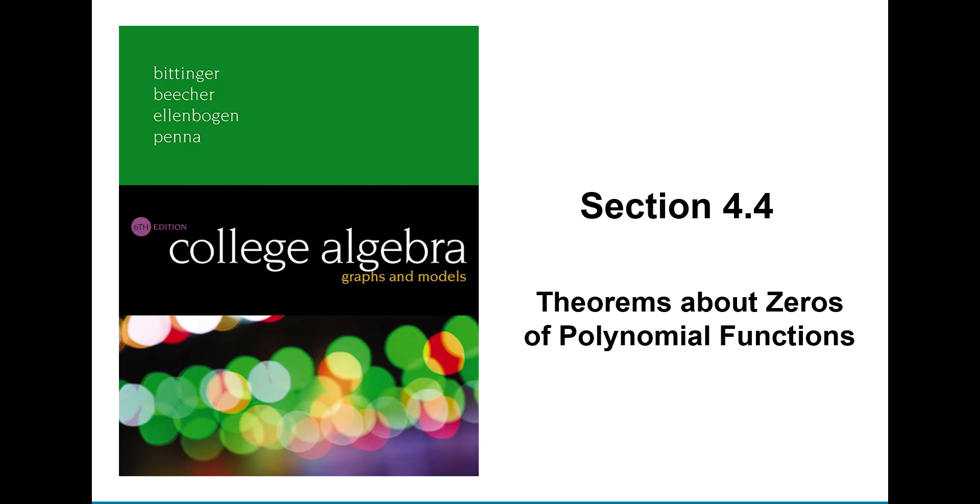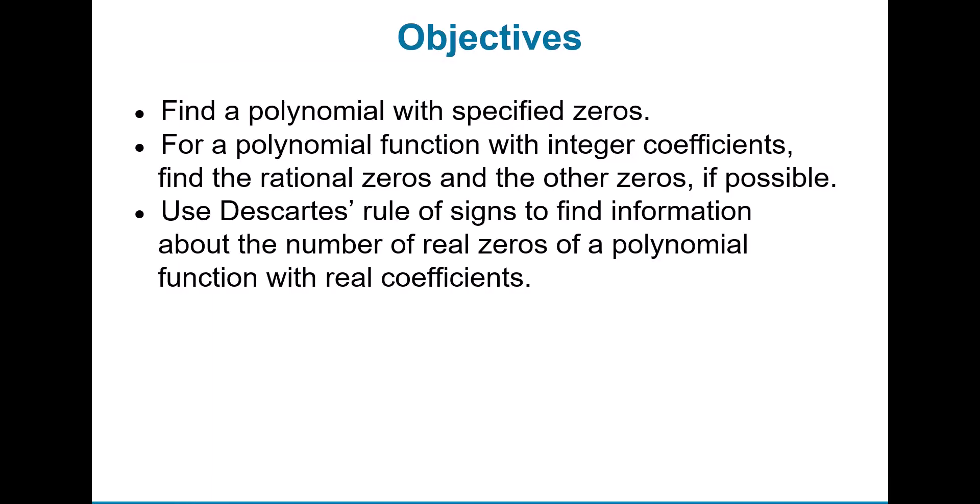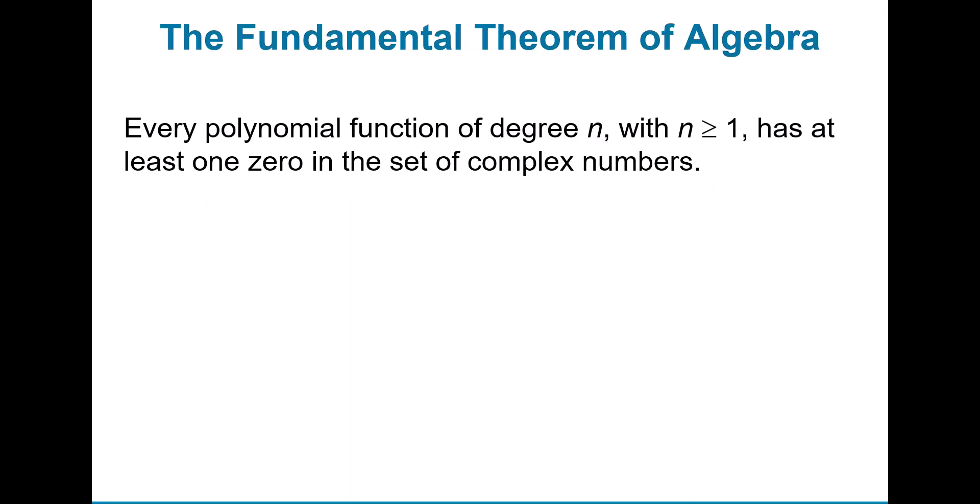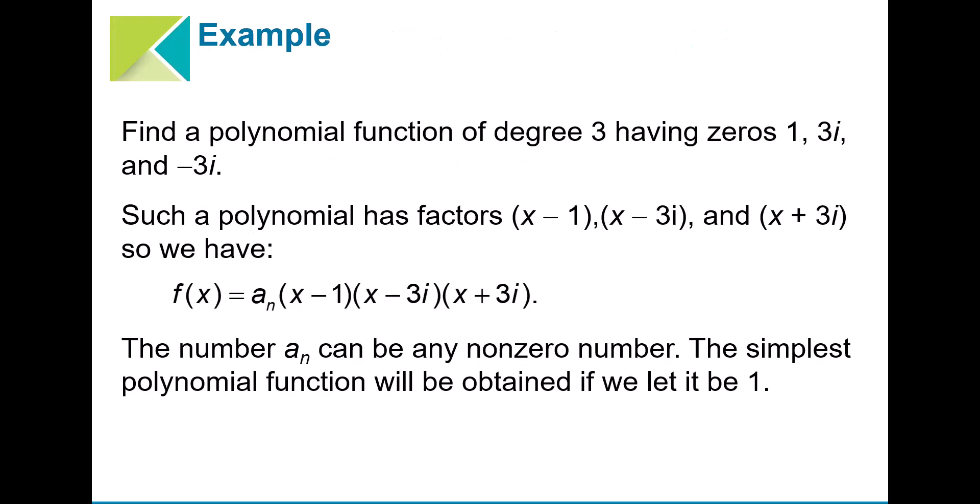In this section you're going to look at some theorems about zeros of polynomial functions. We'll work through many of these in the homework problems. The fundamental theorem of algebra states that every polynomial function of degree n with n greater than or equal to 1 has at least one zero in the set of complex numbers.